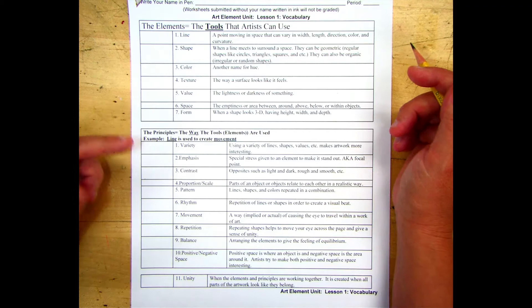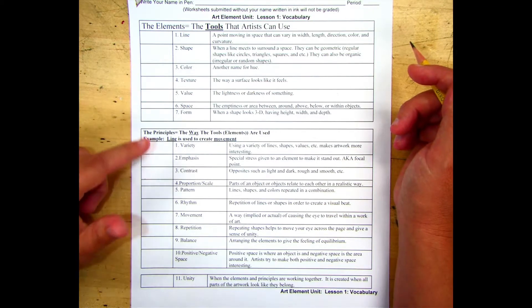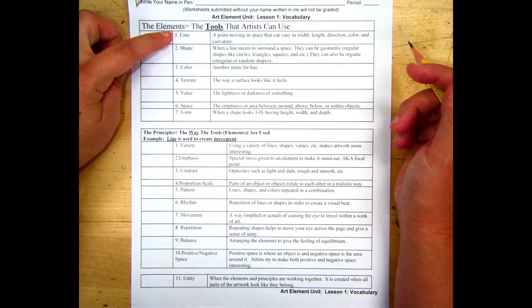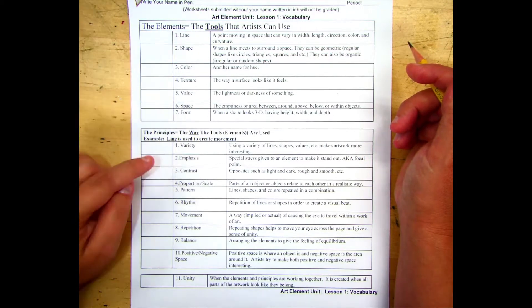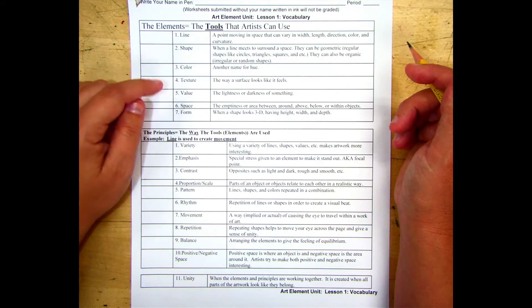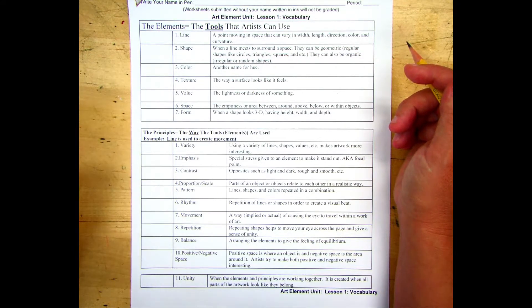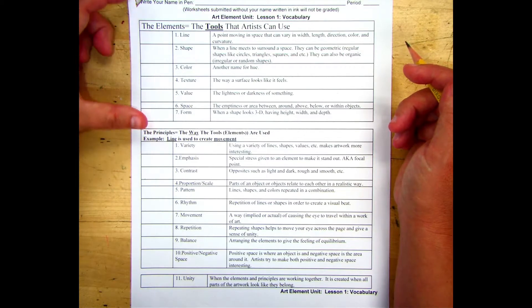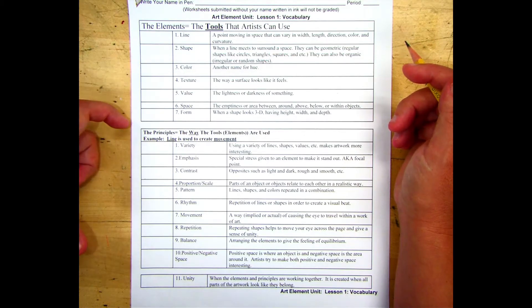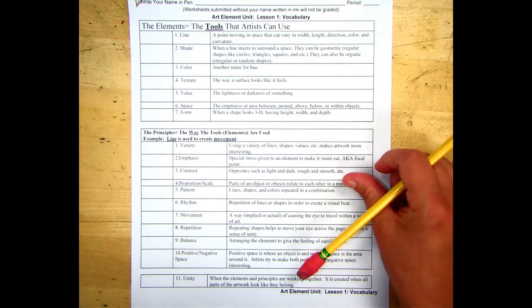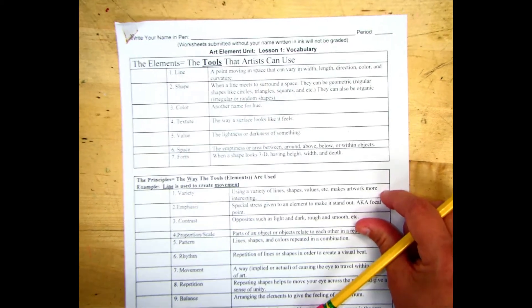The principles of design are the ways that you can apply those tools. For example, you have line and you can use it to create an emphasis on something. You have value and you can use that to create contrast. We're going to go over the elements first and then the principles of design. You're going to draw pictures to help you remember these in each one of these boxes. Go ahead and copy me. You're going to need a pen or a pencil.